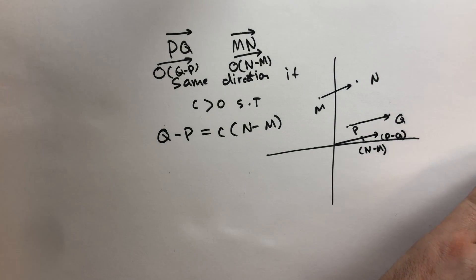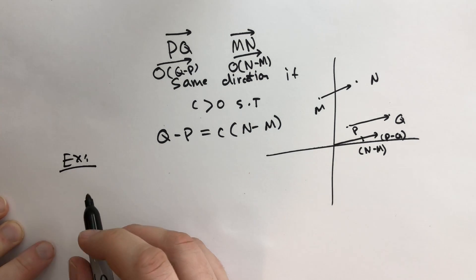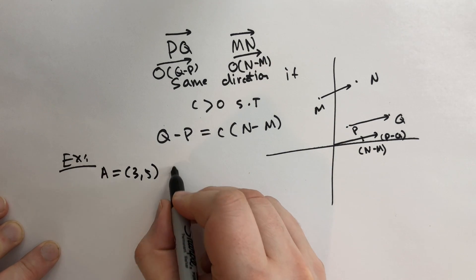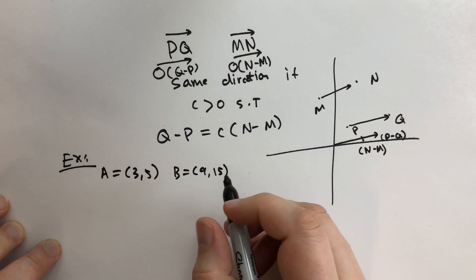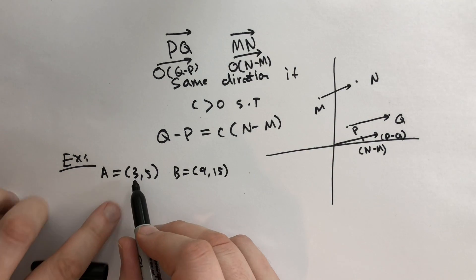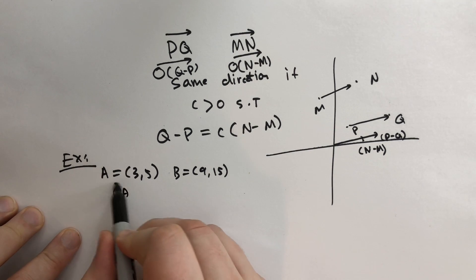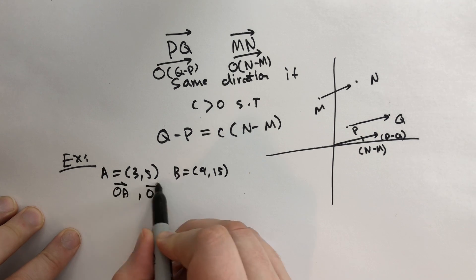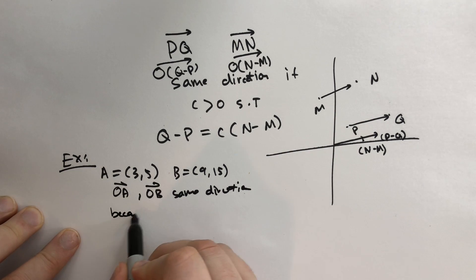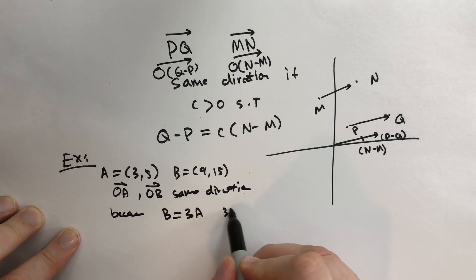Let's do an example. We have two points A equal to three comma five and B equal to nine comma fifteen. Are these the same direction? Well, we can multiply three by three to get nine, and five by three to get fifteen. So OA and OB are in the same direction because B equals three times A and three is greater than zero.